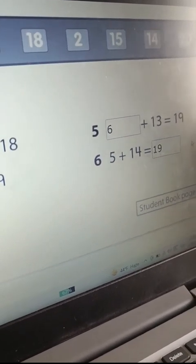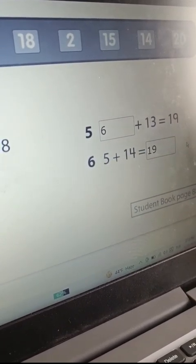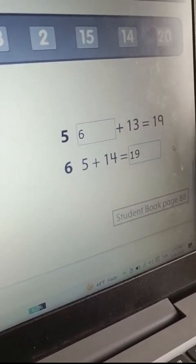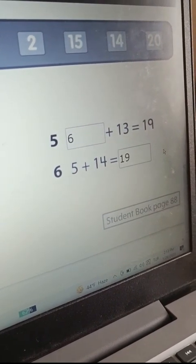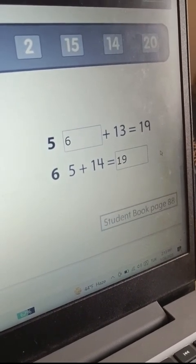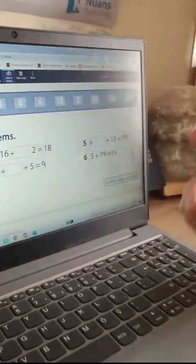And the last one. Five plus fourteen equals ninety. Very good. You are very good at adding numbers.